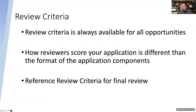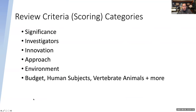Review criteria is available for all applications — it always follows the notice of funds at the very end. When you finish the application, go read the review criteria and then read each section and see if you hit those points. The review criteria include significance, investigators (what's your team like), innovation, approach (lots of detail required or they'll score you low), and environment (do you have the equipment and facilities you need). Budget, human subjects, vertebrate animals, and additional topics are things they comment on but are not necessarily a major factor of review.